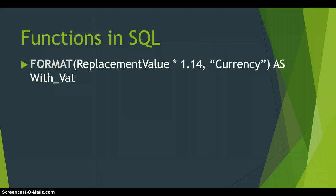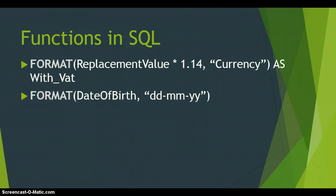The FORMAT function works for many different types — currency, fixed, and more. It also works for dates. If you want to change how a date looks, you say FORMAT, then the field name such as date_of_birth, then in double quotes the format you want. For example, two characters for day, two for month, and two for year gives you a date like 01/01/12. There are lots of different combinations available.